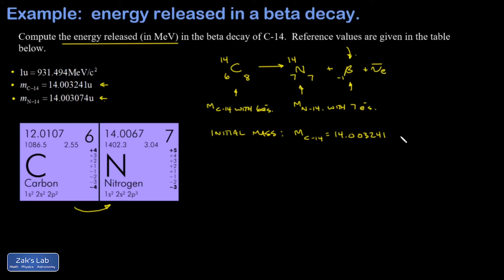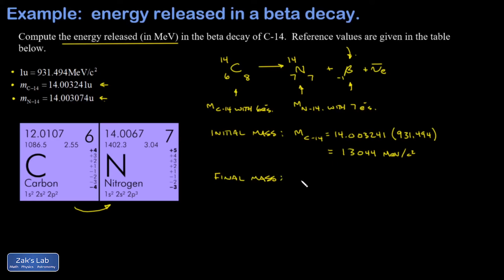The initial mass of C14 is 14.003241 atomic mass units. Converting by replacing the atomic mass unit with 931.494 MeV/c² gives us 13,043.93 MeV per c squared. Then I look at the mass of everything coming out of the reaction. The mass of N14 from the tables already includes the extra electron, and the mass of the neutrino is negligible.